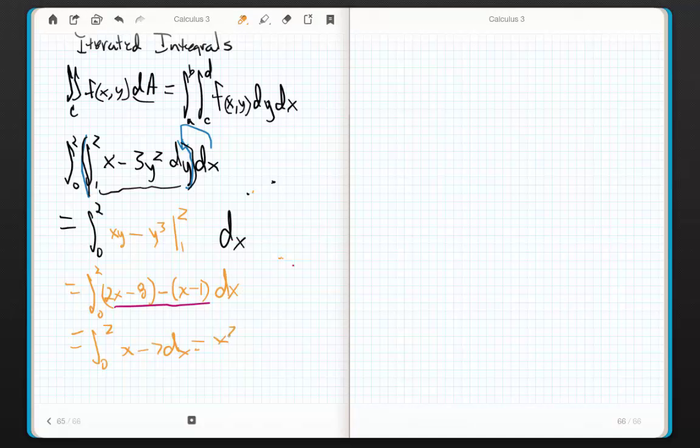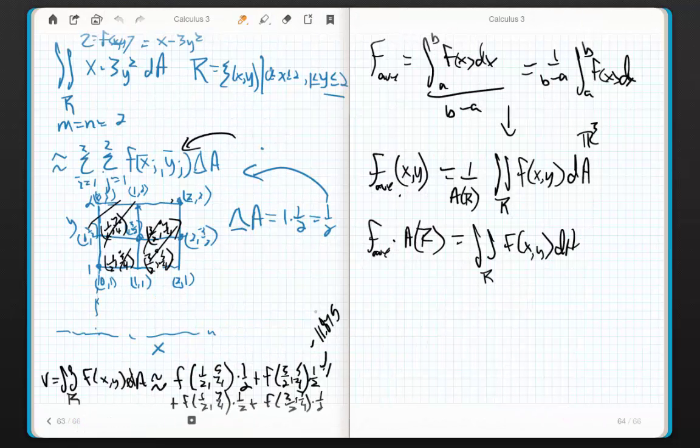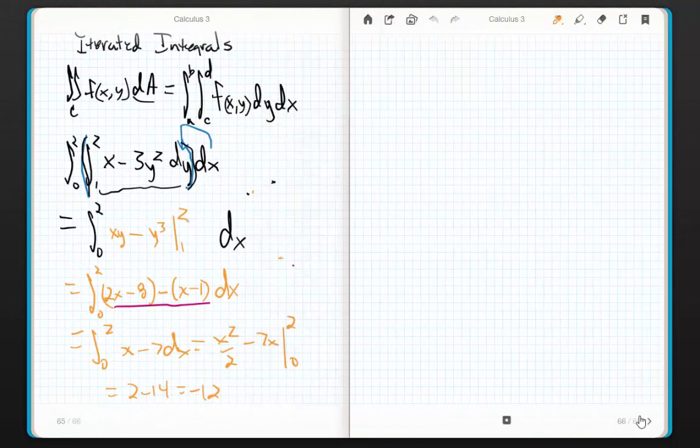This is equal to the integral from 0 to 2. 2x minus x is x. Negative 8 minus a negative 1 is minus 7 dx. And now look at that. It's delightful. I get x² halves minus 7x from 0 to 2. The 0 disappears, so this is going to be 2 minus 14, which equals negative 12. Yay! What did we get before? Negative 11.875, and that was with just four subintervals. That's pretty cool.